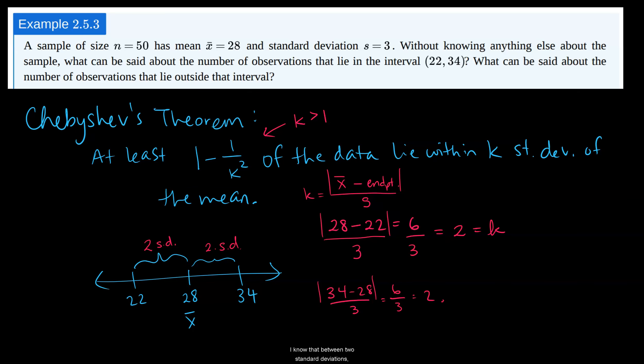I know that between two standard deviations, two standard deviations away from 28, away from my mean, gets me this interval. And even though it's given to us in the book, if I have k, I can plug k into this formula for Chebyshev, 1 minus 1 over k squared, and I get 1 minus 1 fourth,